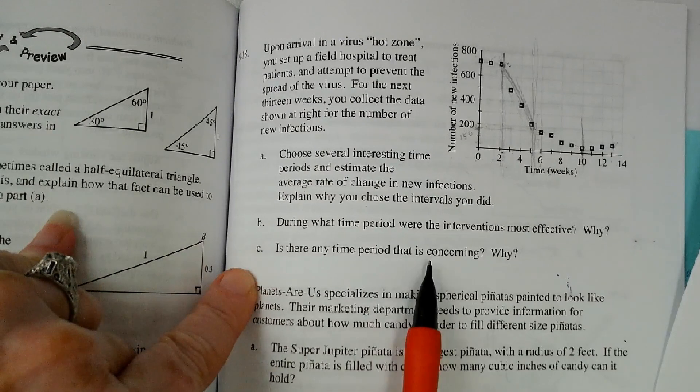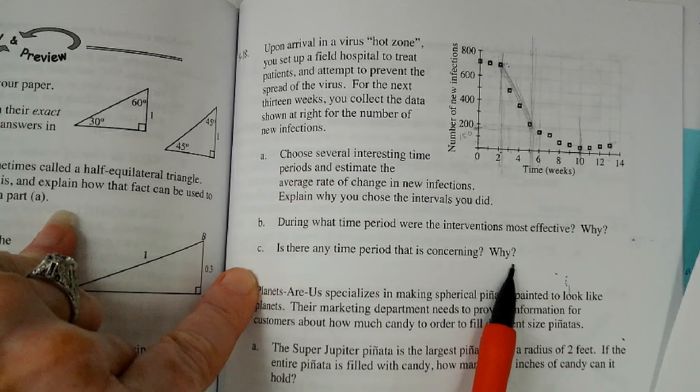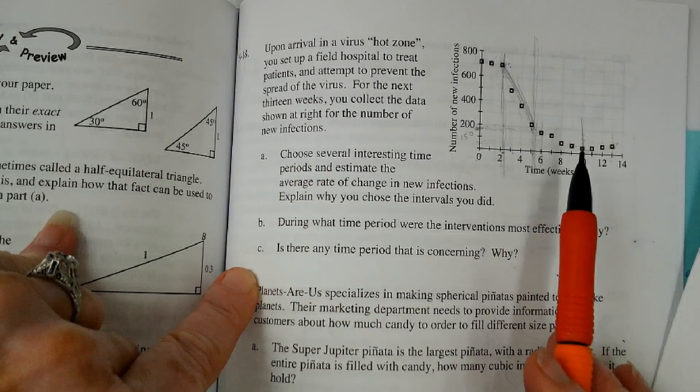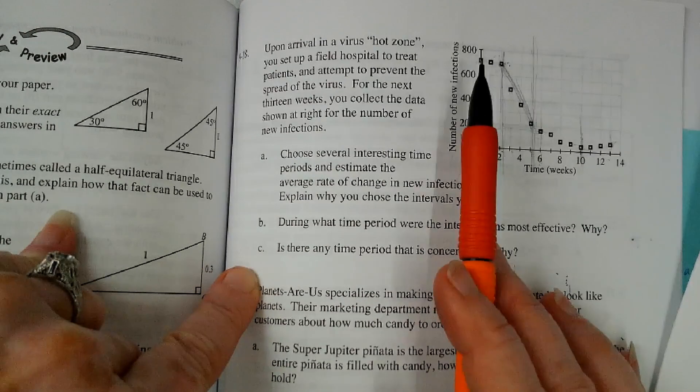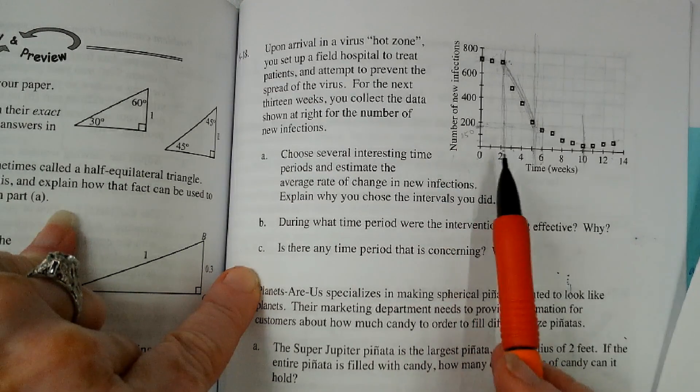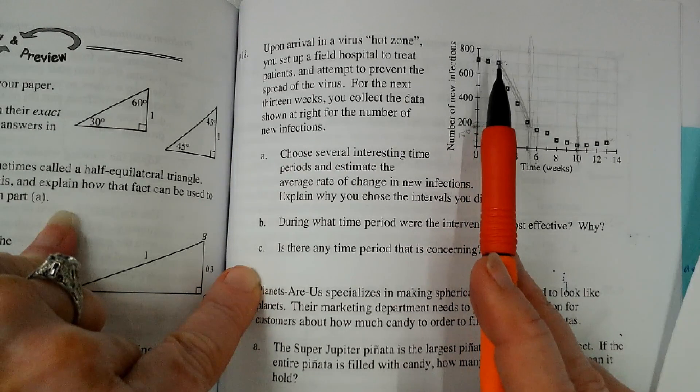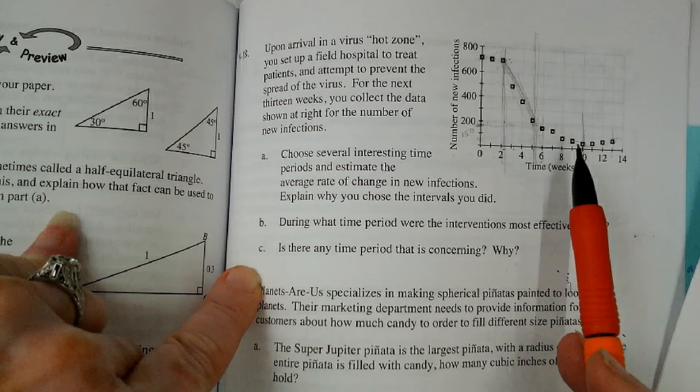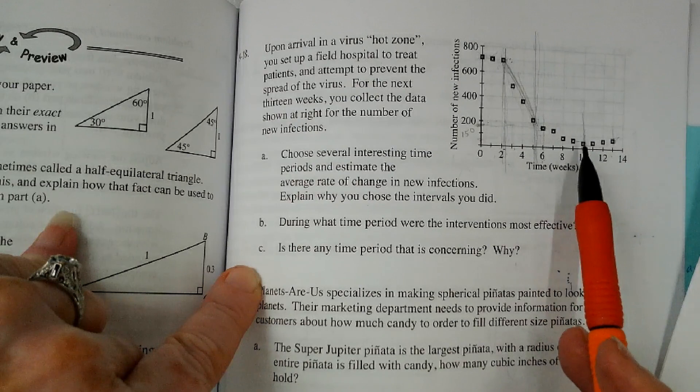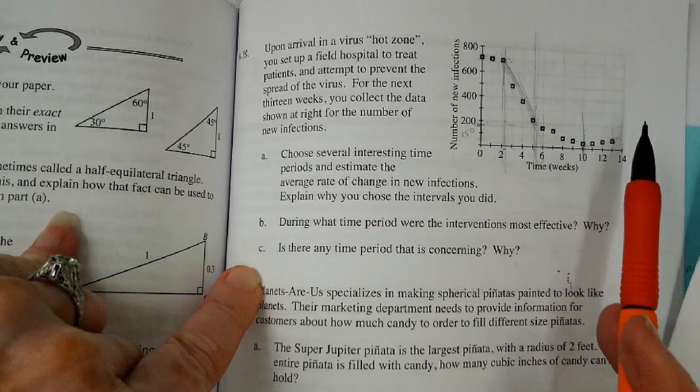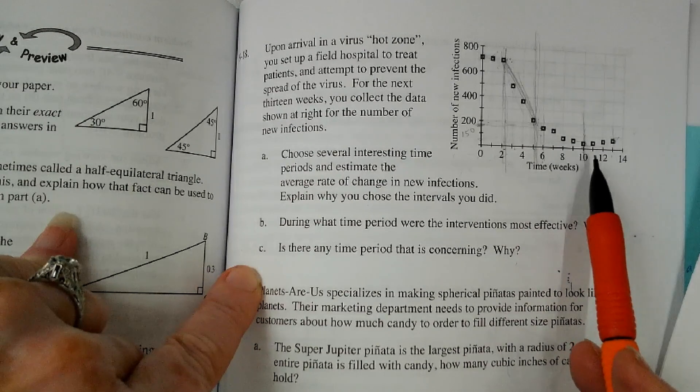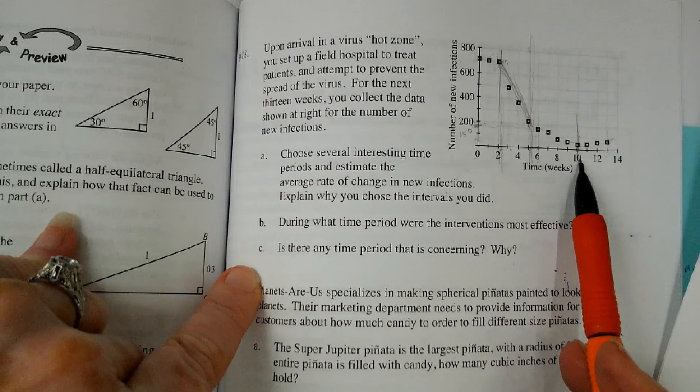And is there any time period that's concerning? Yeah, this time period where, I mean at first, this part, this time period between zero and two was a little bit concerning because it looked like it wasn't going to drop off very fast. But this is the most concerning because it almost looks like it's getting ready to go back up. So I would say I'm most concerned about the time period between 10 and 13.